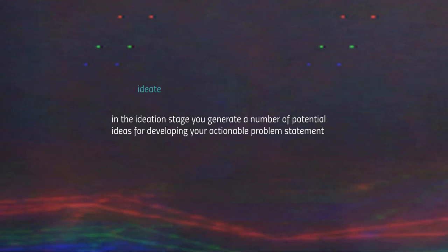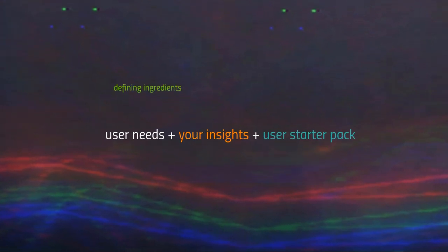Before we proceed, a quick reminder of the way a problem statement is framed. The defining ingredients of your problem statement are your identified user needs — the needs identified during the process of observation — the insights you've gathered about your users and the larger context in which you will be operating, and the starter pack of your users: the specific frame which captures who your users are, what they think, how they behave, what they wear, what they consume.